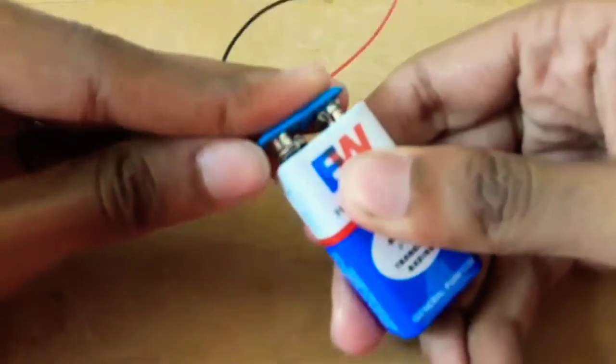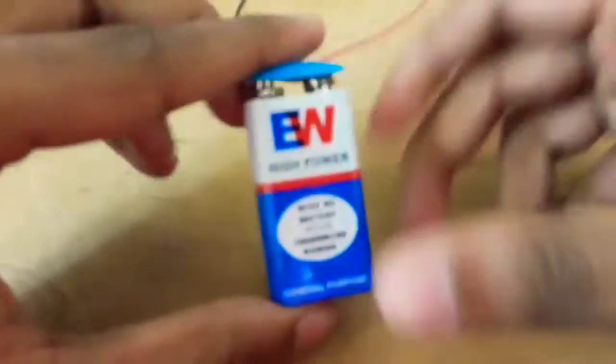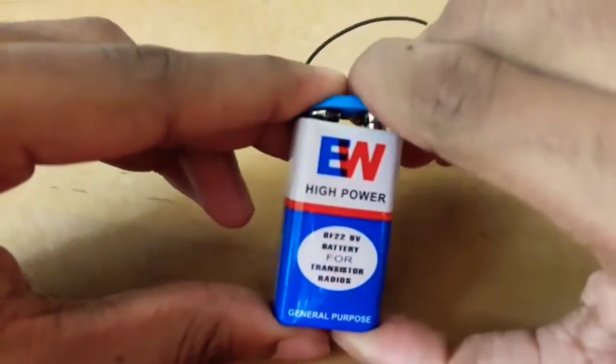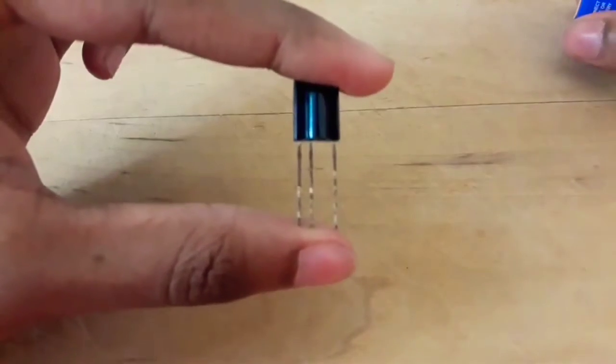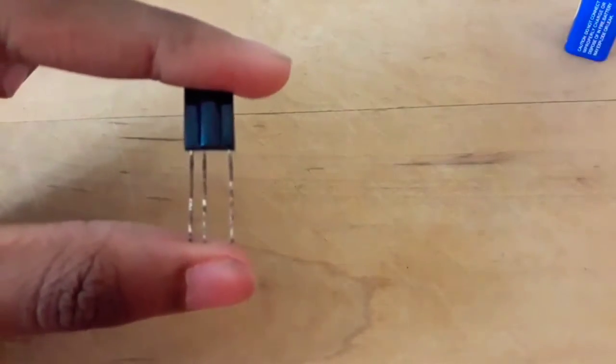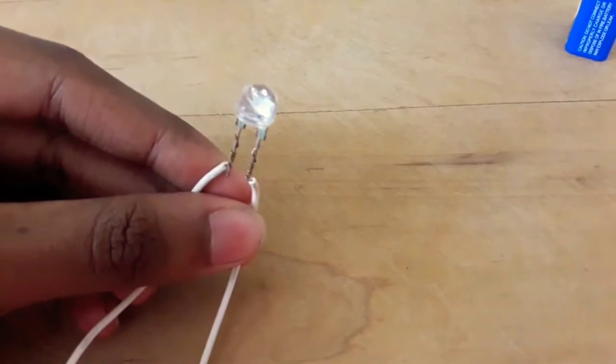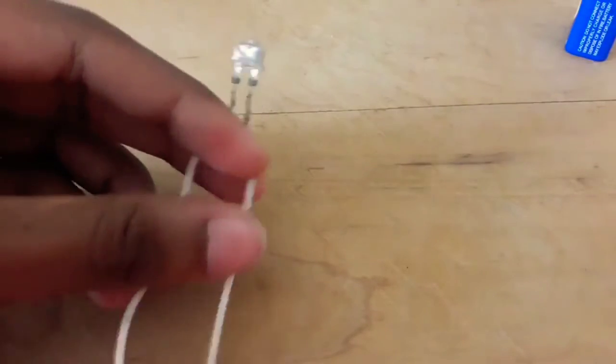So for this project you need a 9V battery with a battery clip. You also need this infrared receiver which is called a TSOP1738. You need an LED and that's it.